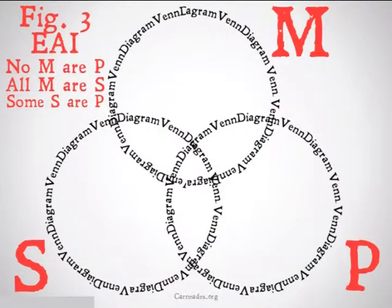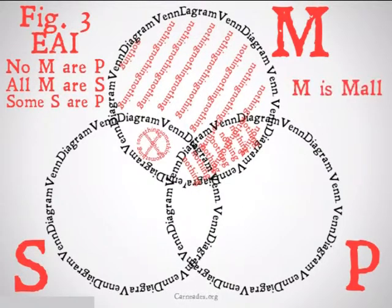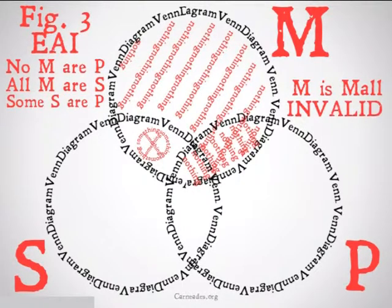So, Figure 3, E-A-I: No M are P, all M are S, therefore some S are P. We fill that in. We see that there's only one area available in the M, so we put a circled X there. We find out that M is non-empty, so that X gets to stay there. However, this is still going to be an invalid argument, because our conclusion is that some S are P, and we don't have anything in that area shared by both S and P.